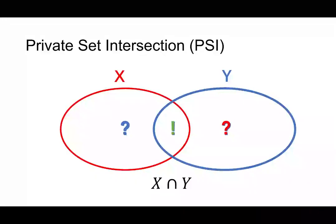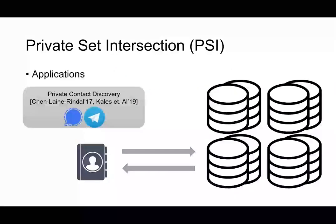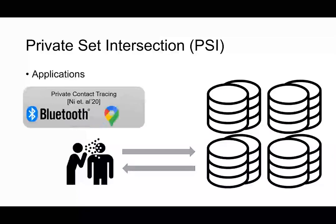First we need to define the private set intersection. Alice has set X, Bob has set Y, and they are going to compute the intersection of X and Y, with the result any other information is leaked. There are several applications such as private contact discovery or private contact tracing, and we are going to focus on a private contact tracing scenario because it fits the updatable setting.